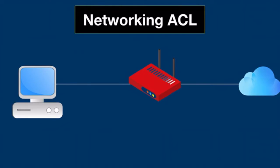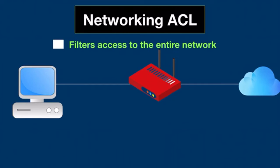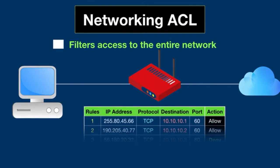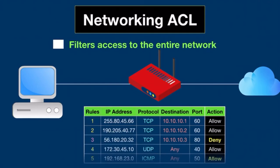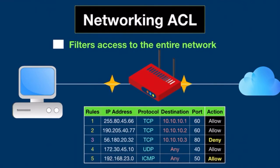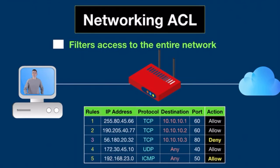Networking ACL filters access to the entire network. It tells routers, switches, and firewalls which type of traffic can access the network and what kind of activity is allowed. Networking ACL also defines what each user or device can do once they are inside.